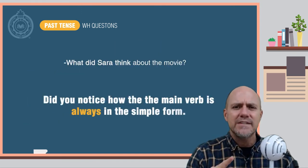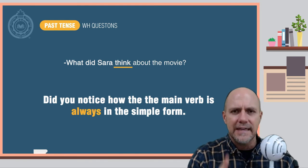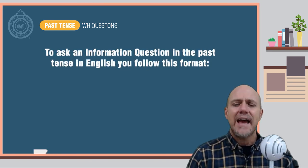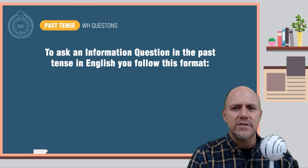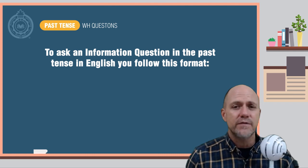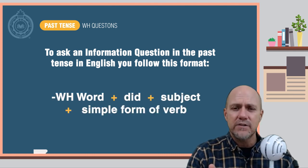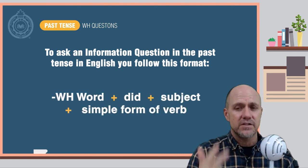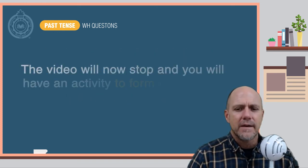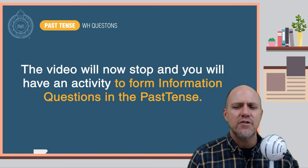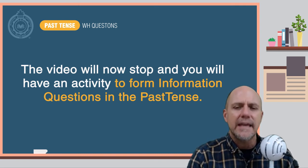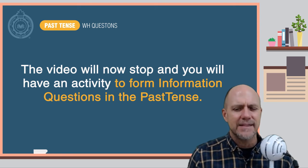Did you notice how the main verb is always in the simple form? So let's review. To ask an information question in the past tense in English, you follow this format: WH word plus DID plus the subject plus the verb in the simple form. The video will now stop and you will have an activity to practice forming information questions in the past tense.